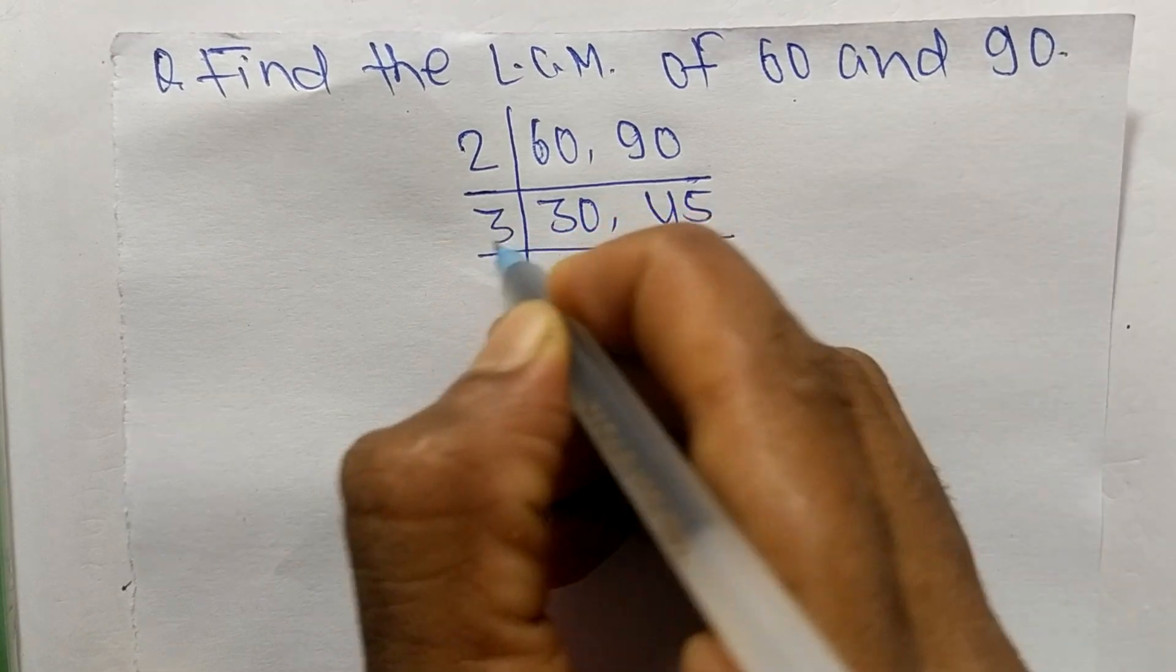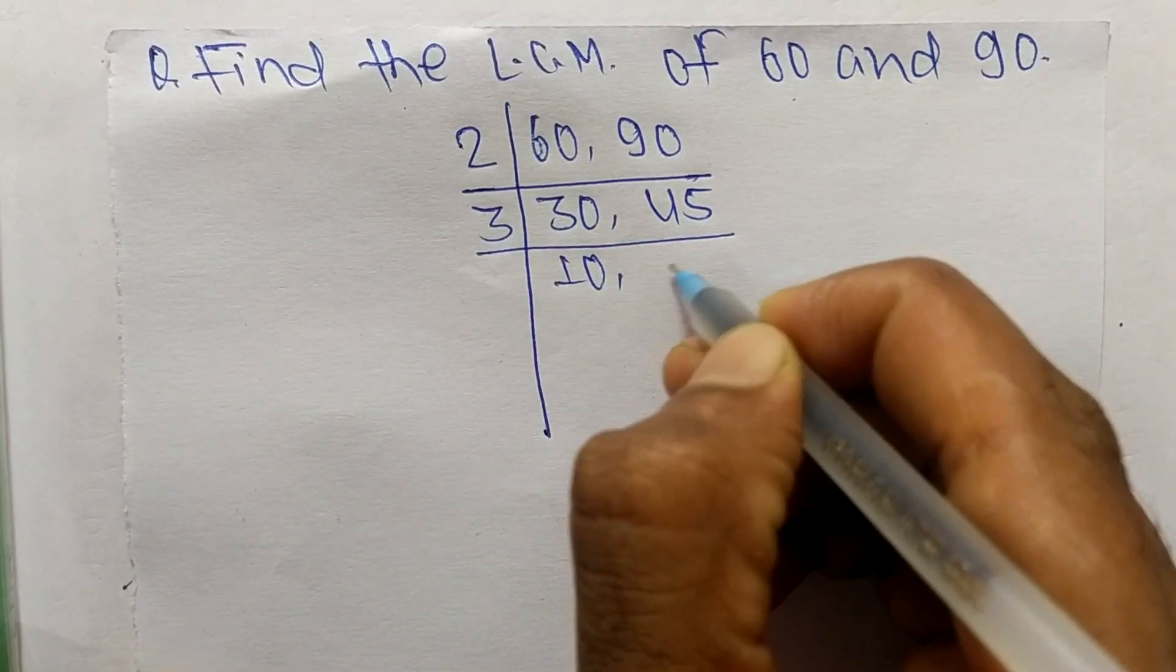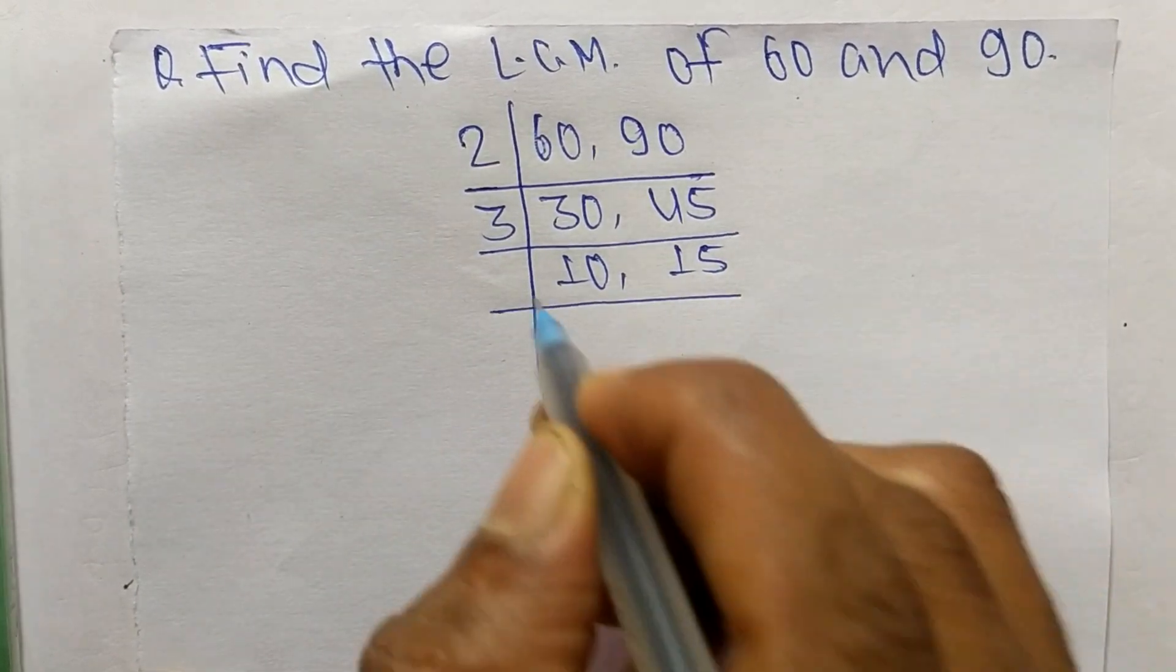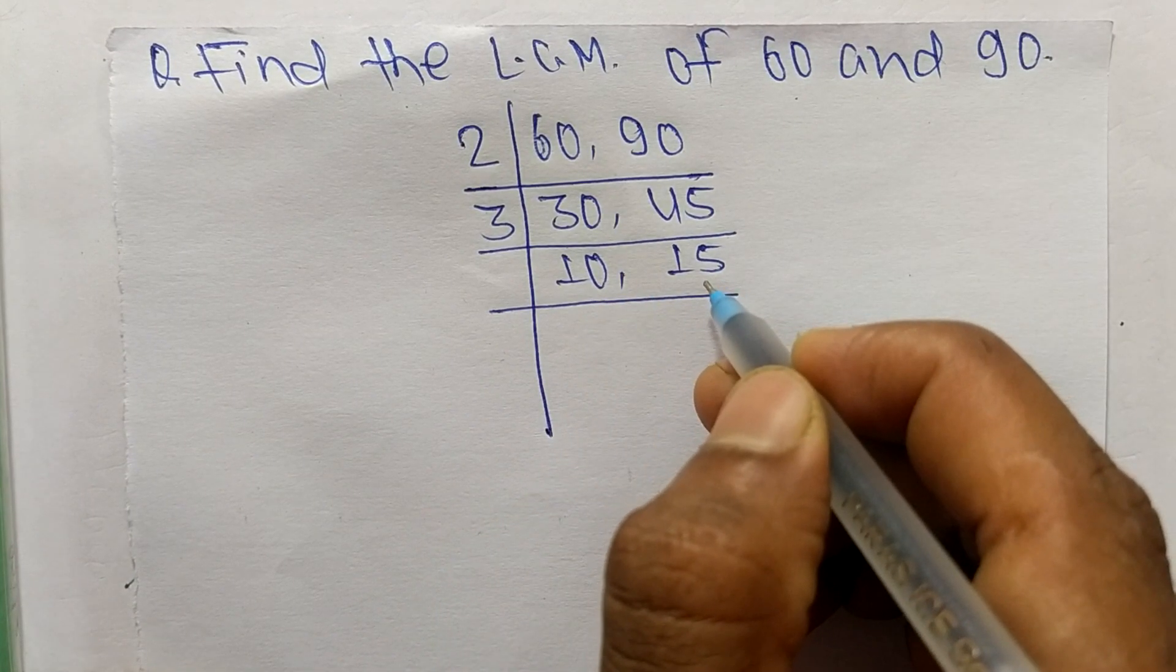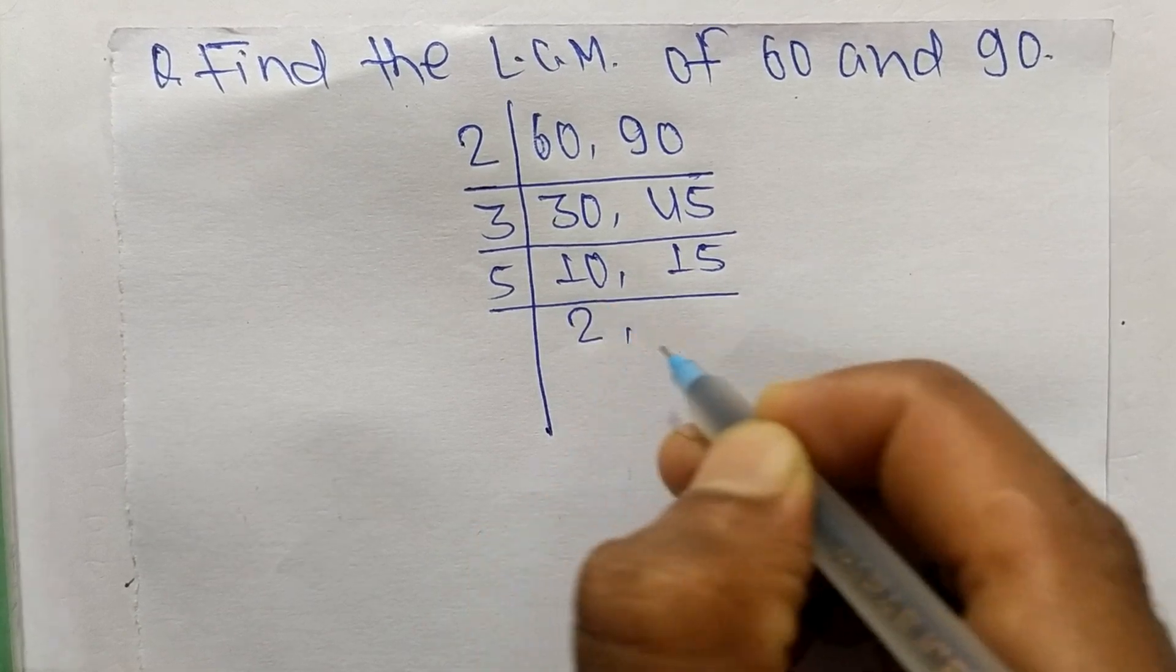So the number is 3. 3 times 10 means 30, 3 times 15 means 45. Now again, 3 can't divide both 10 and 15 exactly, so we take 5. 5 times 2 means 10.